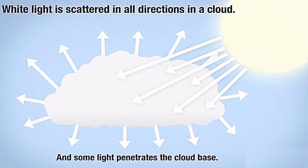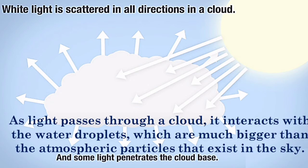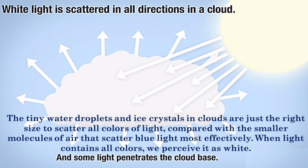Whereas when the white light strikes a cloud, which is made up of larger water droplets, all colors of light get scattered in equal amount, and that is why we see clouds as white in color.